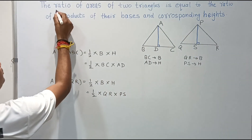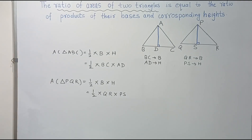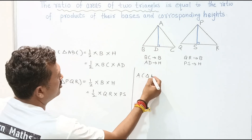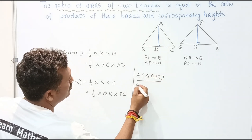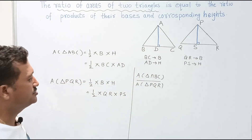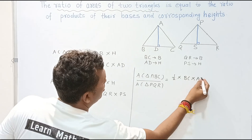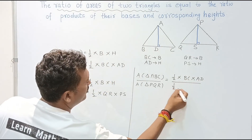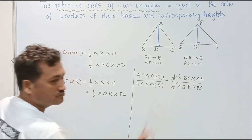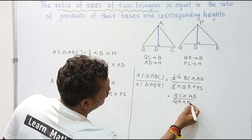Now we want the ratio of areas of the two triangles, that means area of the first triangle upon area of the second triangle. So: area of triangle ABC upon area of triangle PQR equals (half into BC into AD) upon (half into QR into PS). The two halves cancel, giving us BC into AD upon QR into PS.